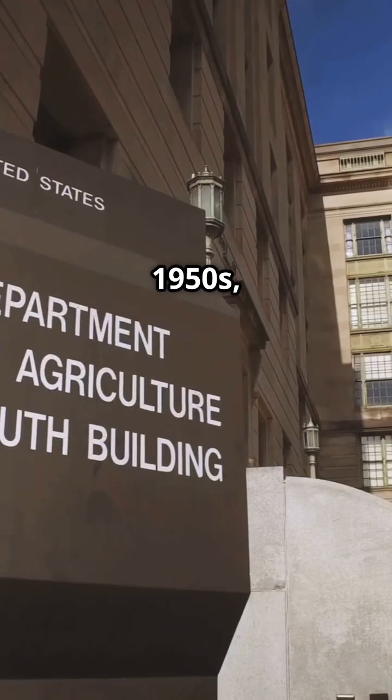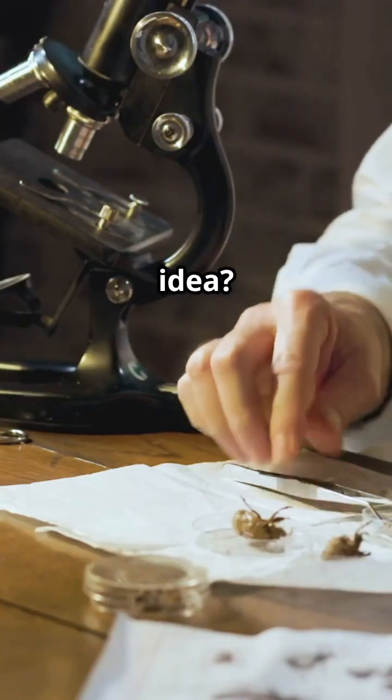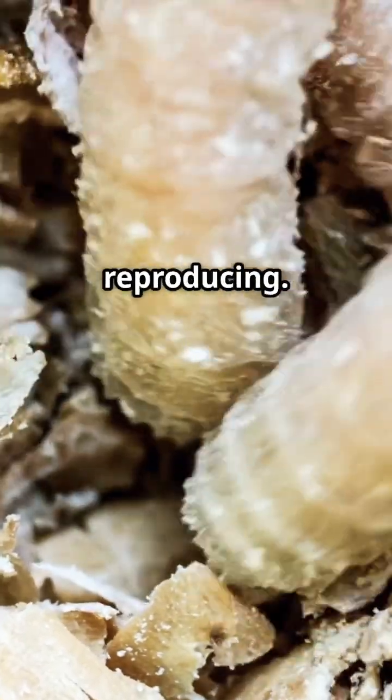But in the 1950s, the USDA launched the Sterile Insect Technique. The idea? Release millions of sterilized screwworms to mate with wild ones, stopping them from reproducing.